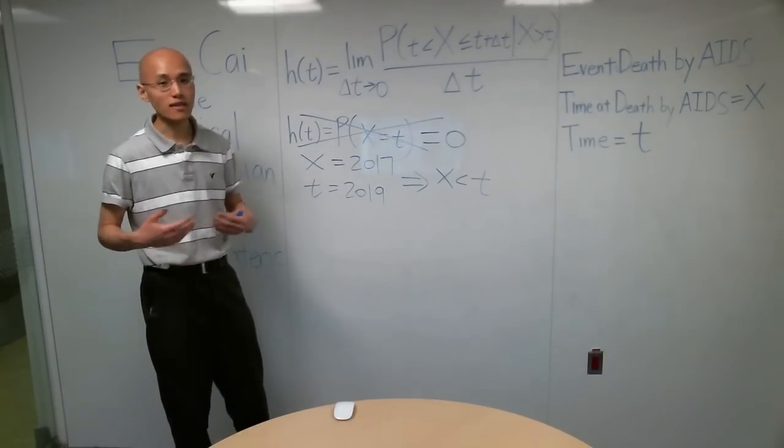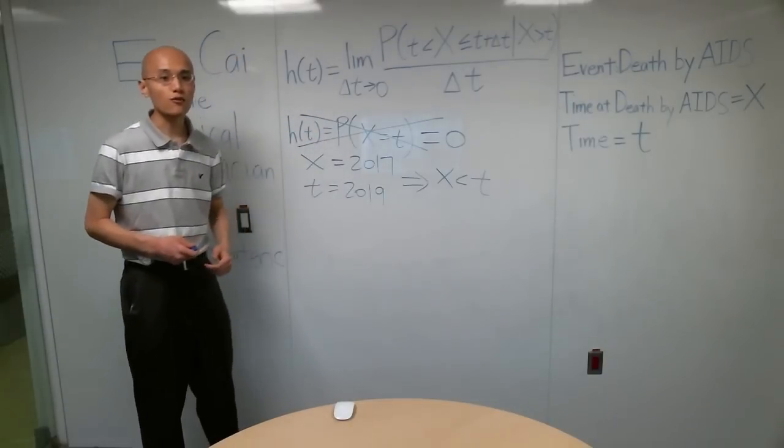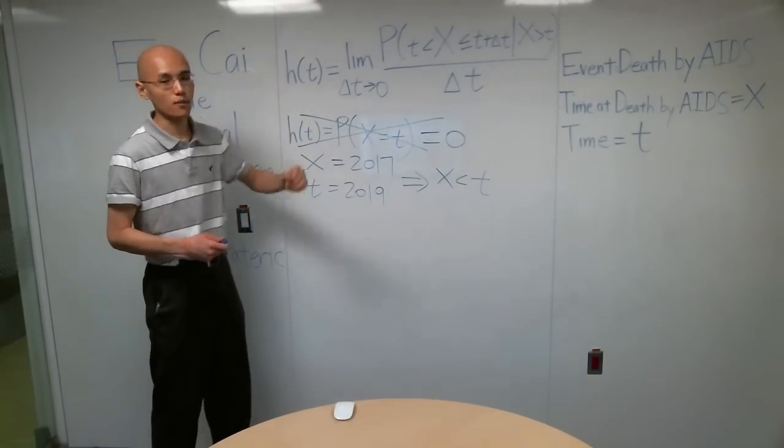We have to assume that the event hasn't happened yet. That is why we use this conditional probability. That is why we condition on the event X is bigger than T.